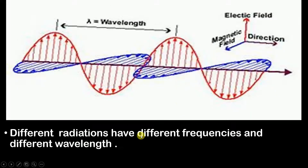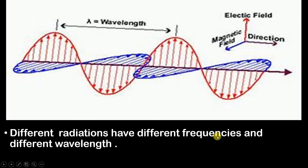Different radiations have different frequencies and different wavelengths. For example, a radio wave and visible light, being different types of radiation, will have different frequencies and different wavelengths compared to each other.